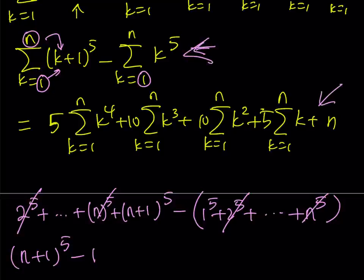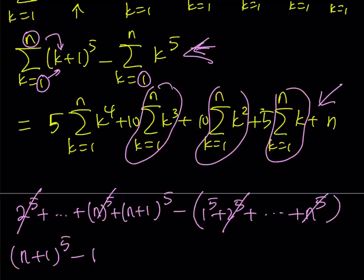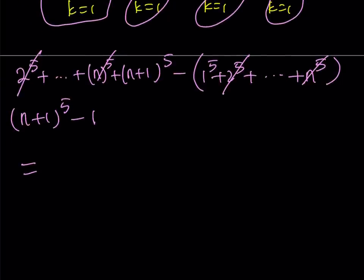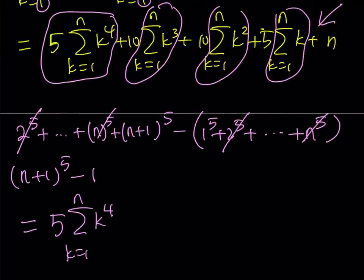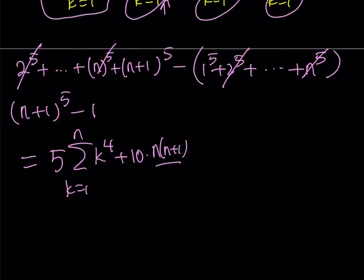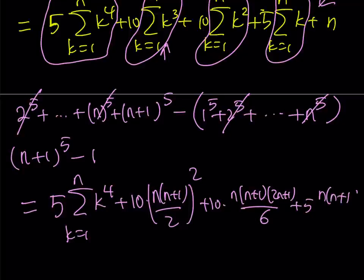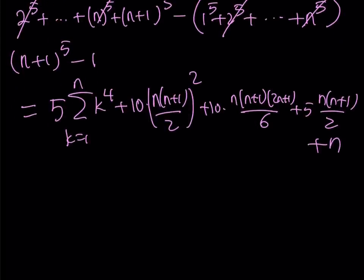On the right-hand side, we do know the formulas for the sum of cubes, the sum of squares, and the sum of k. Let's go ahead and plug them in. We get 5 times the sum from k equals 1 to n of k to the 4th power, plus 10 times the cube formula — n times n plus 1 divided by 2, squared — plus 10 times the sum of squares — n times n plus 1 times 2n plus 1 divided by 6 — plus 5 times n times n plus 1 divided by 2, plus n. This expression is equal to n plus 1 to the 5th power minus 1, and I'll be isolating the sum of fourth powers term.